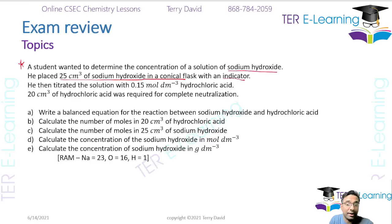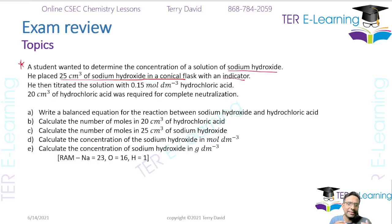He placed 25 cm³ of sodium hydroxide in a conical flask with an indicator. A titration is something that is very common — we try to determine the concentration of an unknown substance. When it comes to titrations, there's something called a standard solution. A standard solution in chemistry is a solution of known concentration. If you see that question in the exam, that is what they want for the answer.